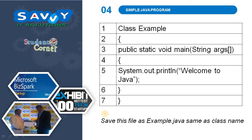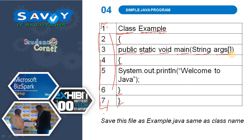Now I will explain a simple Java program. These are line numbers followed by the respective code. The first line contains the keyword class, and 'example' is an identifier. The separators are shown, and public, static, and void are keywords. main is an identifier, String is the data type, and args is the identifier.